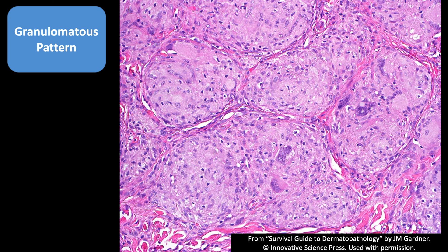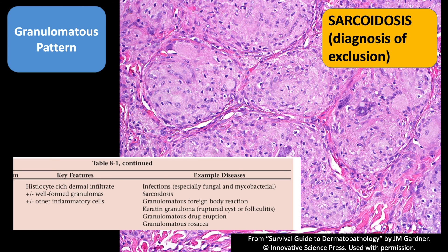Now, granulomatous pattern — pathologists are all familiar with granulomas. When you see these tight granulomas in the dermis with very minimal inflammation around them, usually with little or no necrosis, you can think of sarcoidosis. But it's important to make sure that sarcoid is a diagnosis of exclusion, so you have to do bug stains — I usually use AFB stain or auramine-rhodamine, and PAS or GMS — to make sure that it's not a fungus or AFB infection.